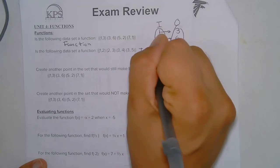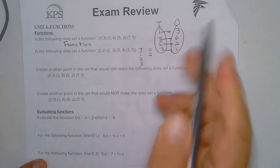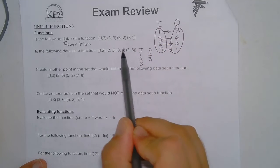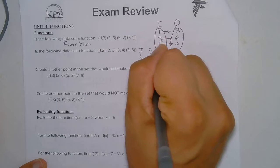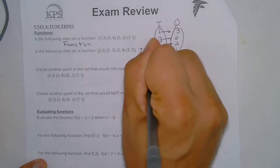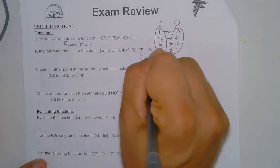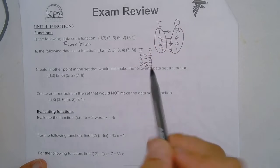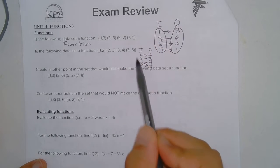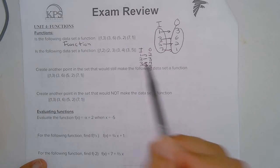1 outputs to 2. 2 outputs to 3. And then 3 outputs to both 4 and 5. So 1 goes to 2, 2 goes to 3, 3 goes to 4 and 5. Now I want you to notice 3 has two outputs. So this is not a function.